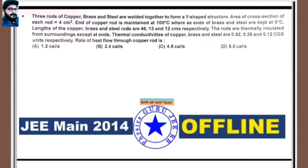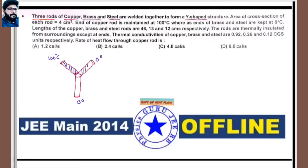Next: JEE Main 2014 offline, based on rate of heat flow. Three rods — copper, brass, and steel — are welded together in a Y-shape. The end of the copper rod is maintained at 100°C and the ends of the brass and steel rods are at 0°C.